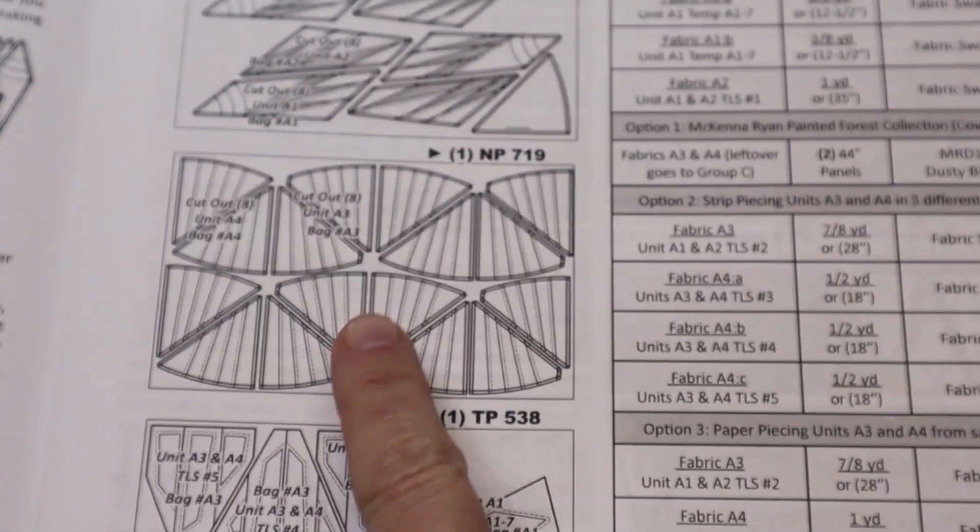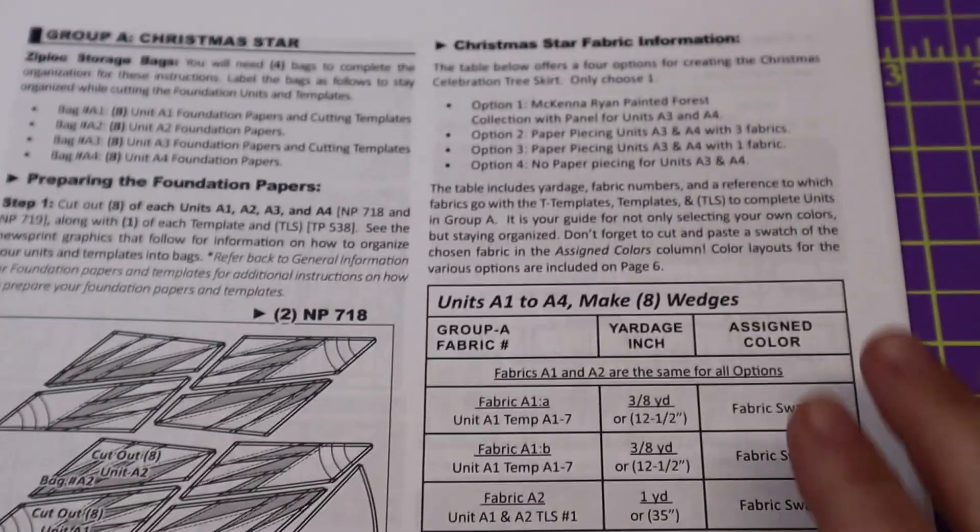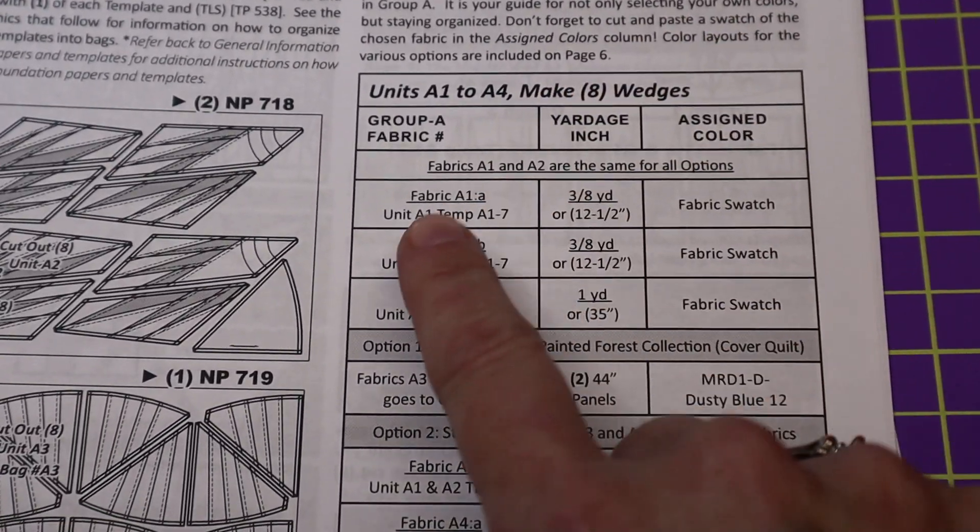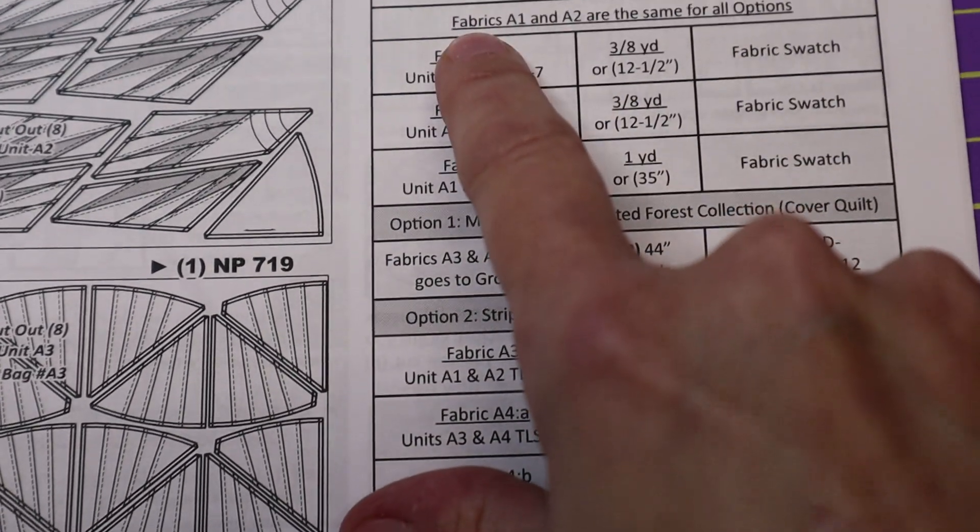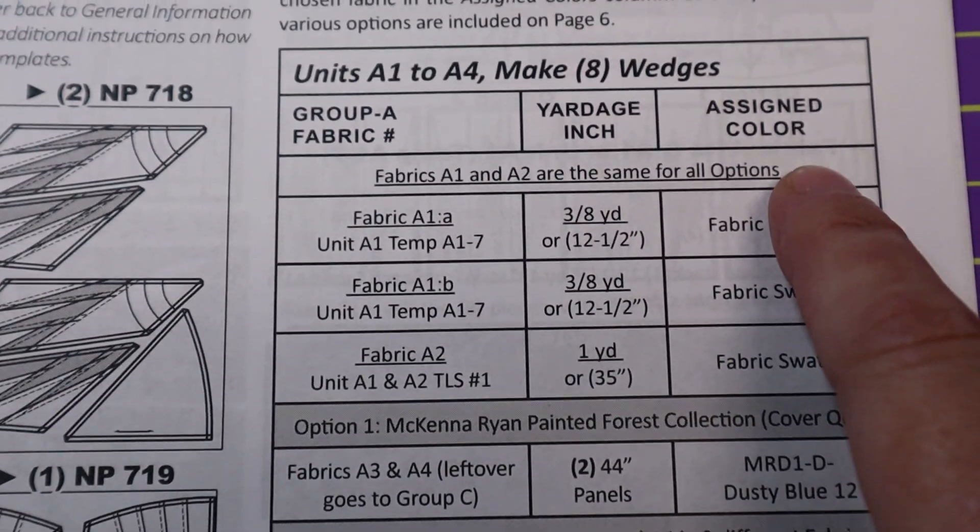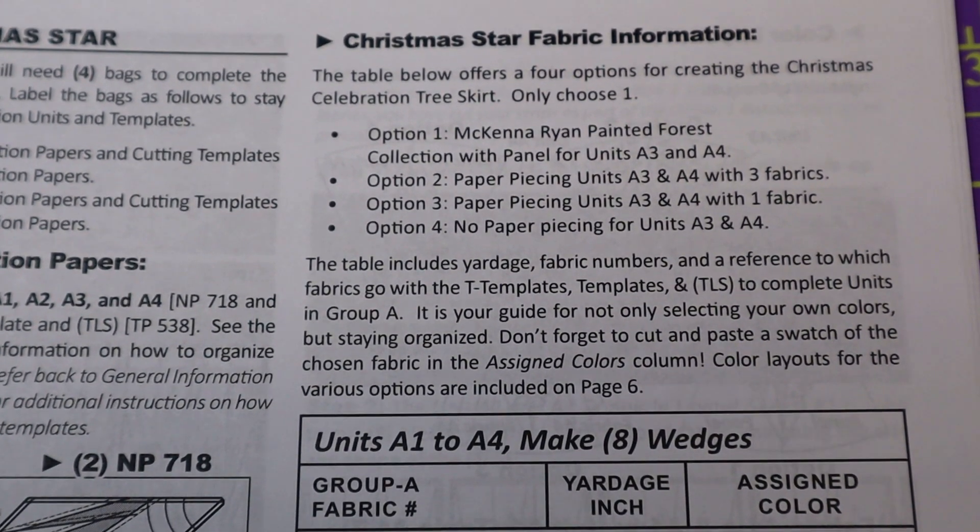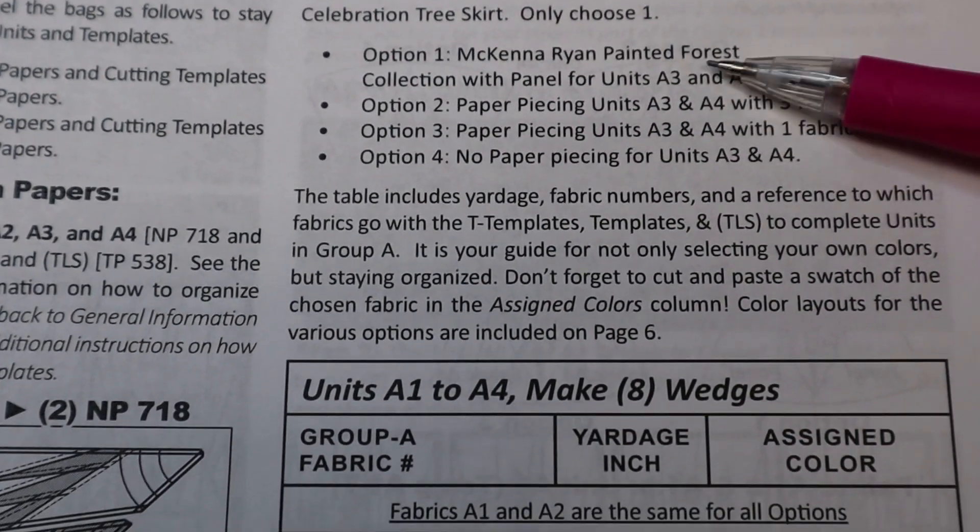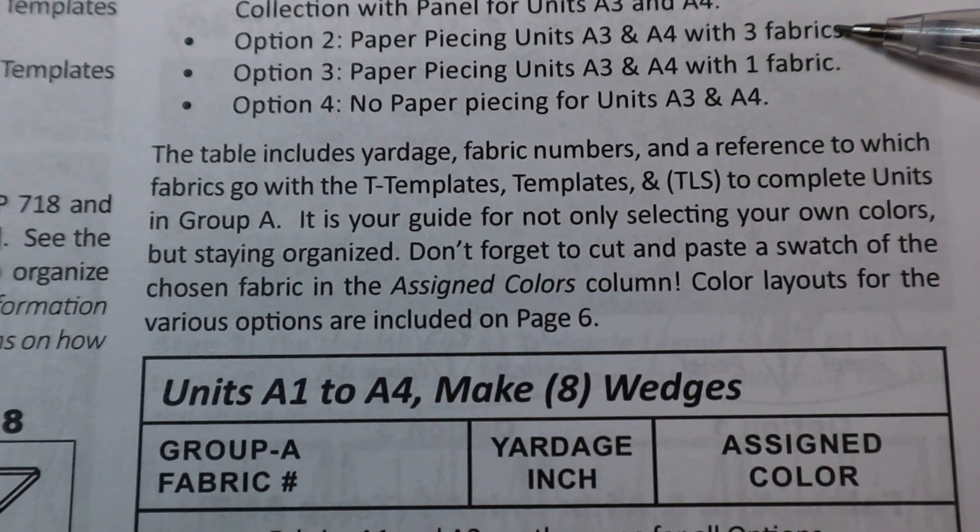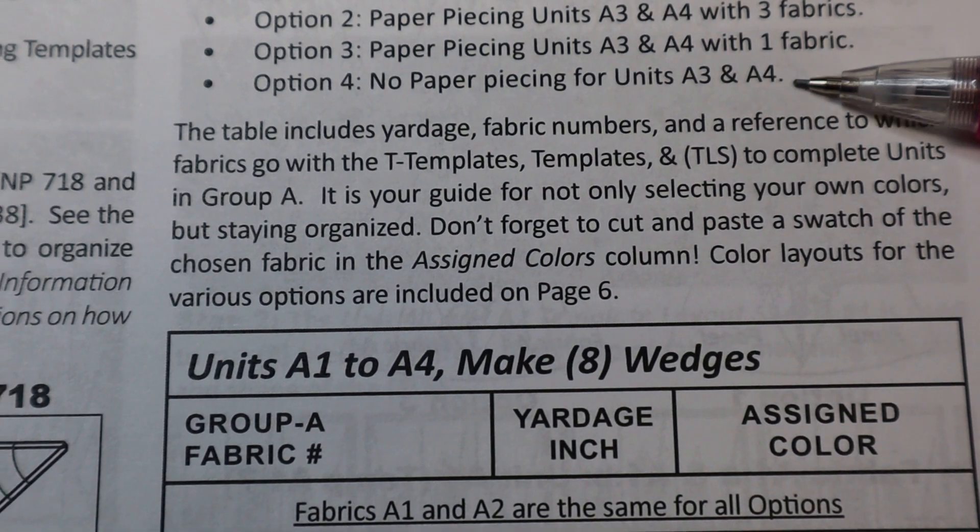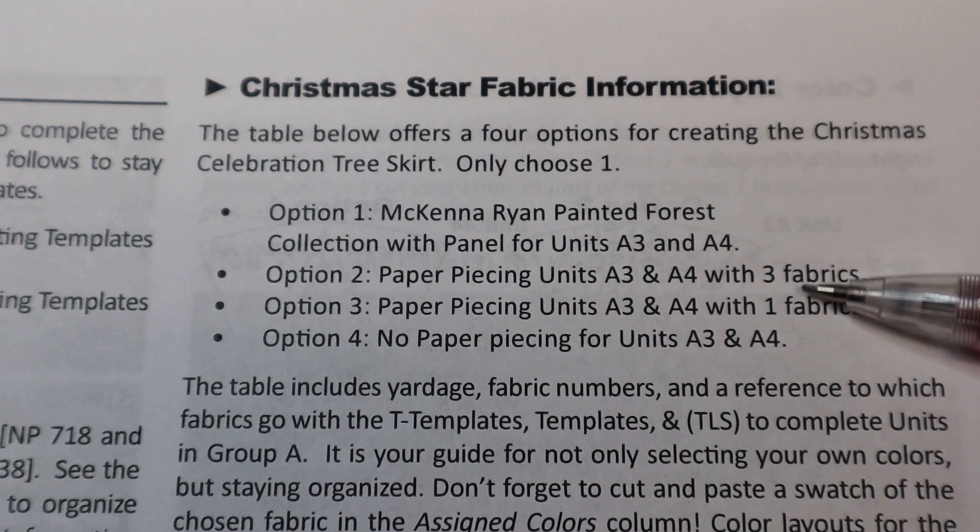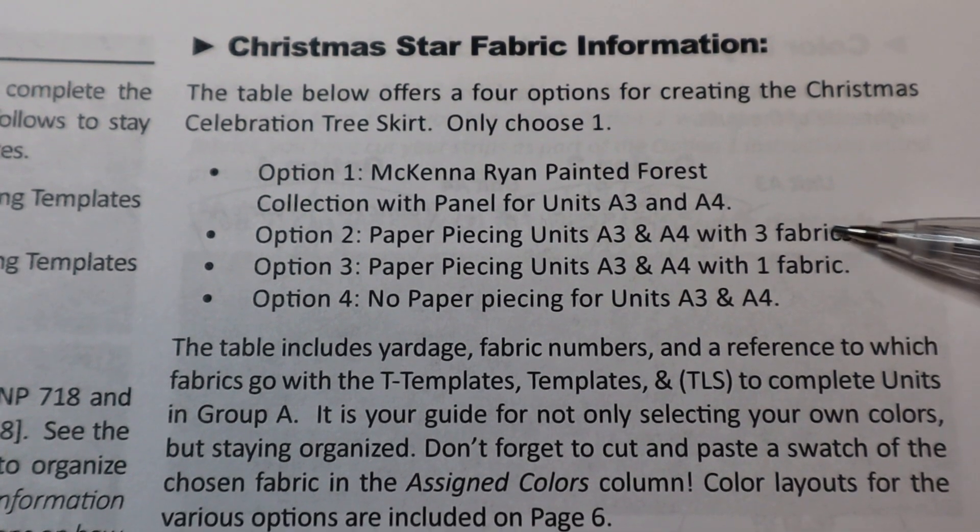Okay, so after you go through the information on what's on the newsprint and what bags they go into, the next part of the pattern is basically your fabric information. It's going to go through each different fabric number. It's going to tell you, like for instance here, this one says fabric A1 and A2 are the same for all options. And what this means is in this pattern, and you'll find this in multiple patterns, that there's different options that Judy gives you. And this one, you can use a panel, you can make it with three fabrics, or with just one fabric, or even an option where there's no paper piecing, which it would just be one solid piece. So keep an eye out for that if there's different options. It's your choice, it's your quilt, so choose whichever one works best for you.